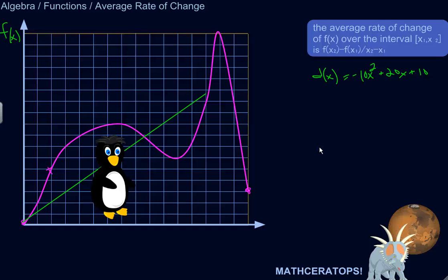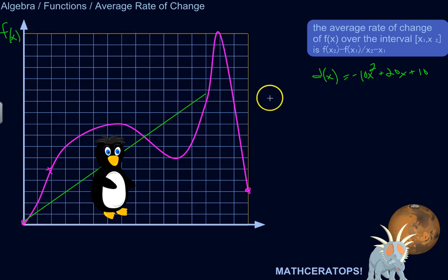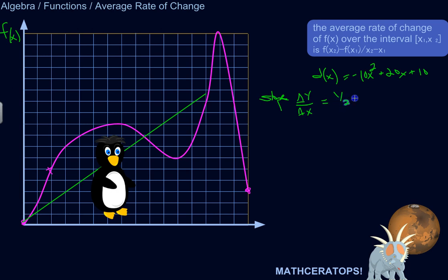The average rate of change of a linear function is pretty easy to calculate. You've been doing this for a while. You might not have called it average rate of change — you might have called it slope. The slope is the change in y over the change in x, which you might call rise over run, or y2 minus y1 over x2 minus x1.